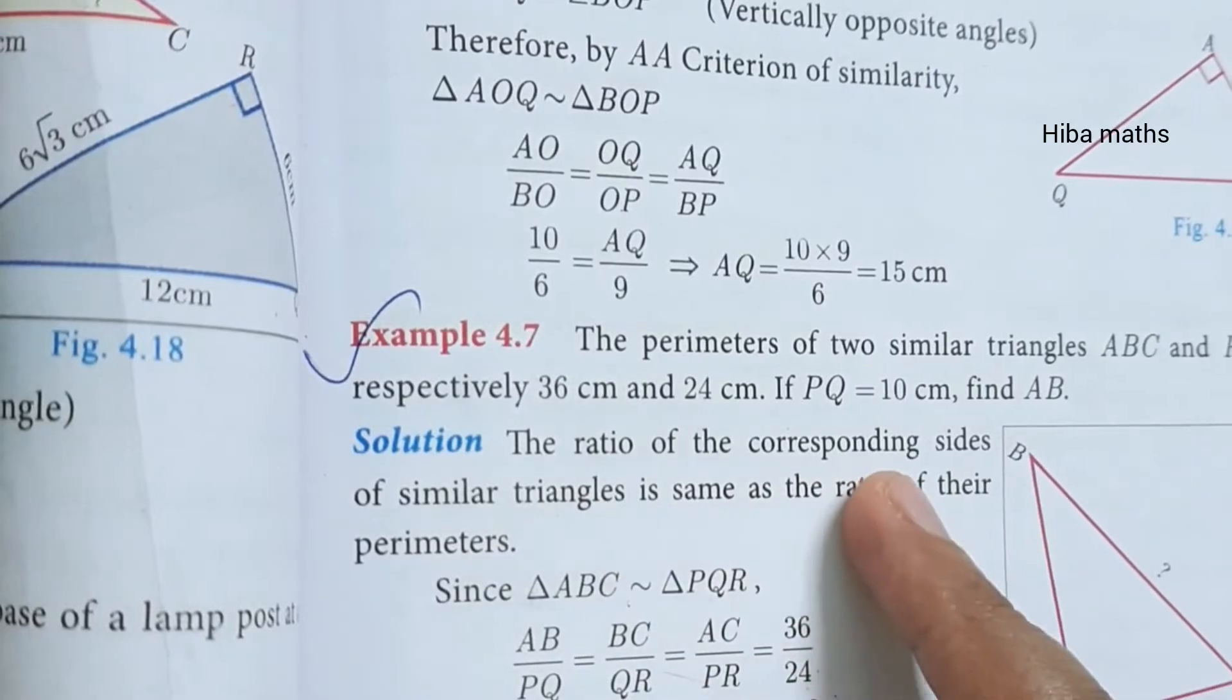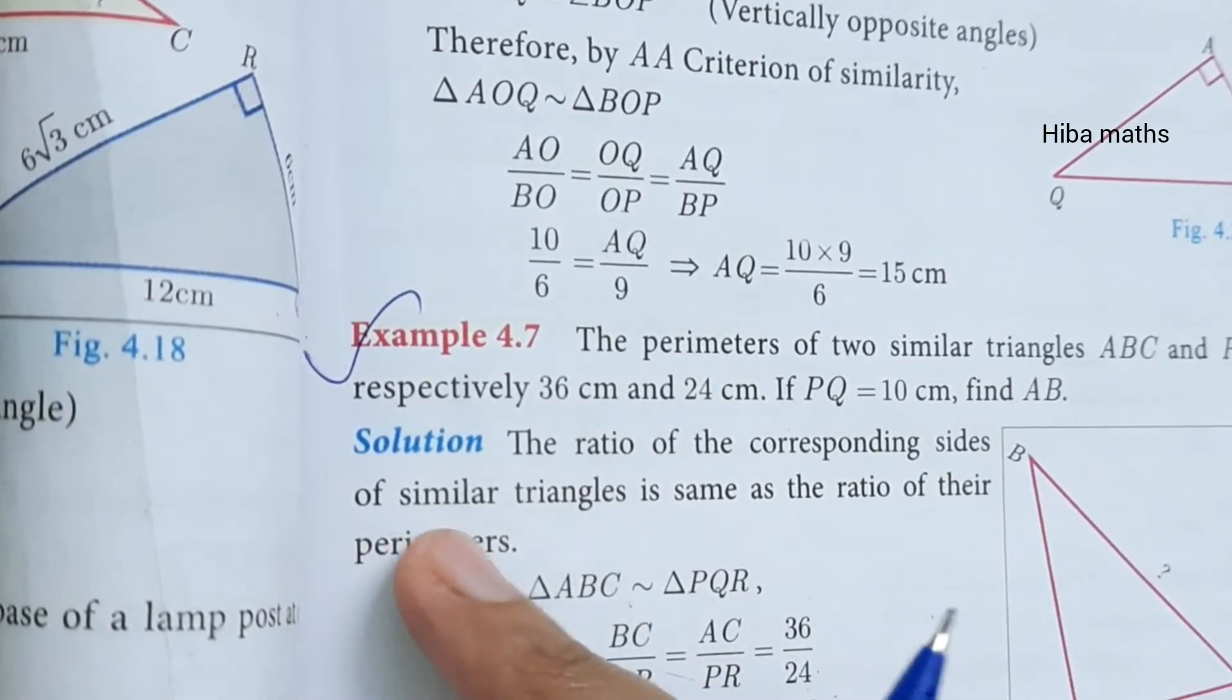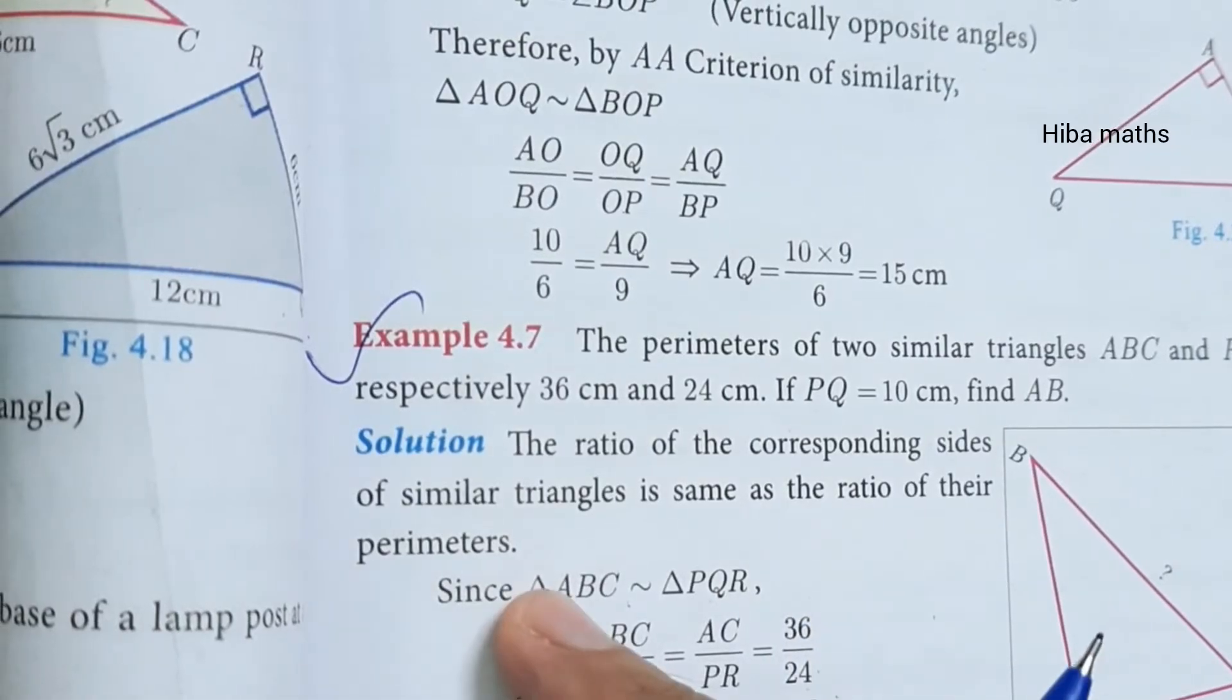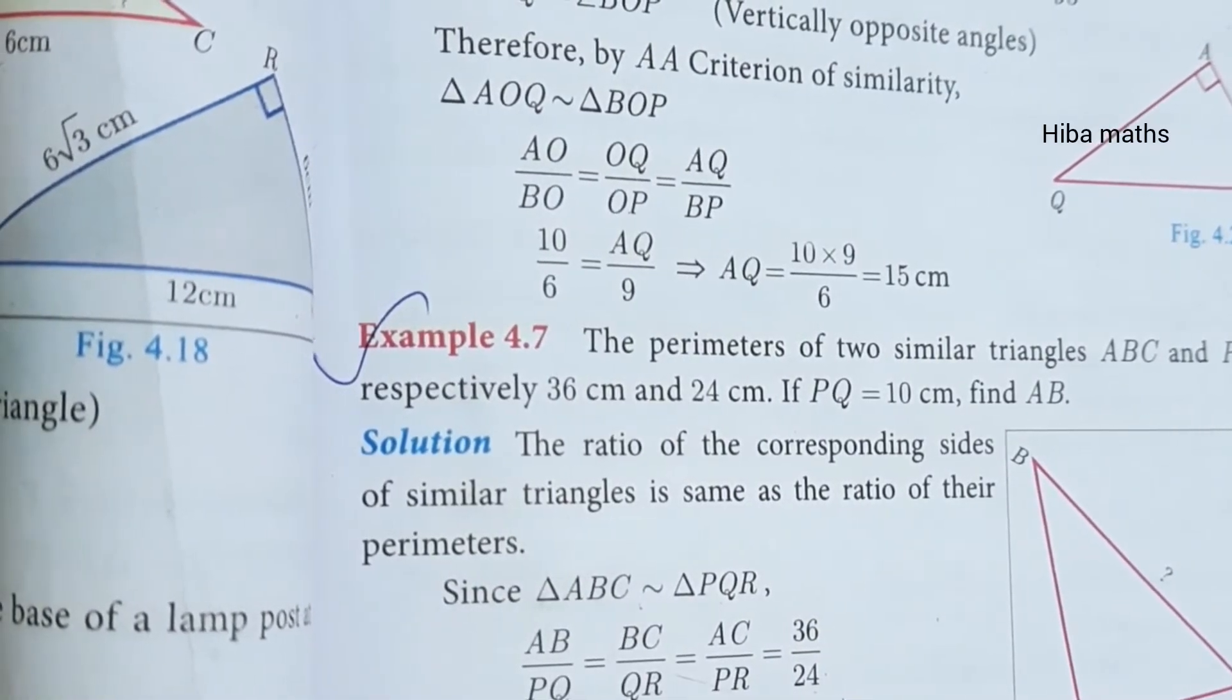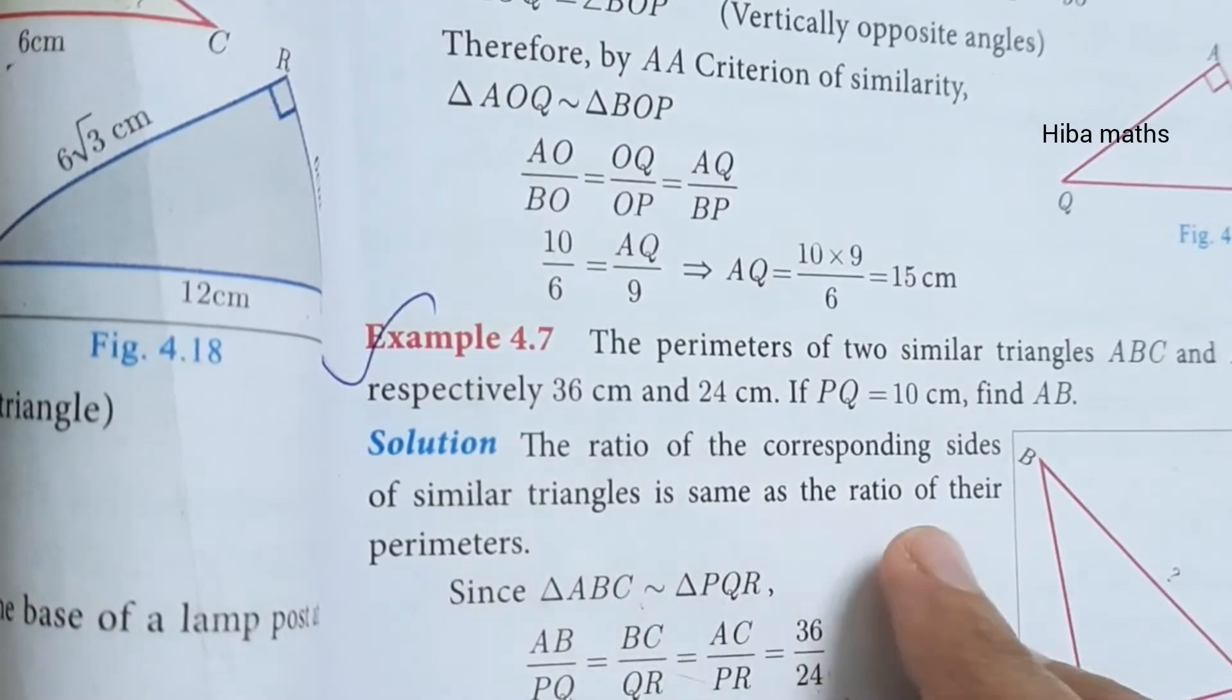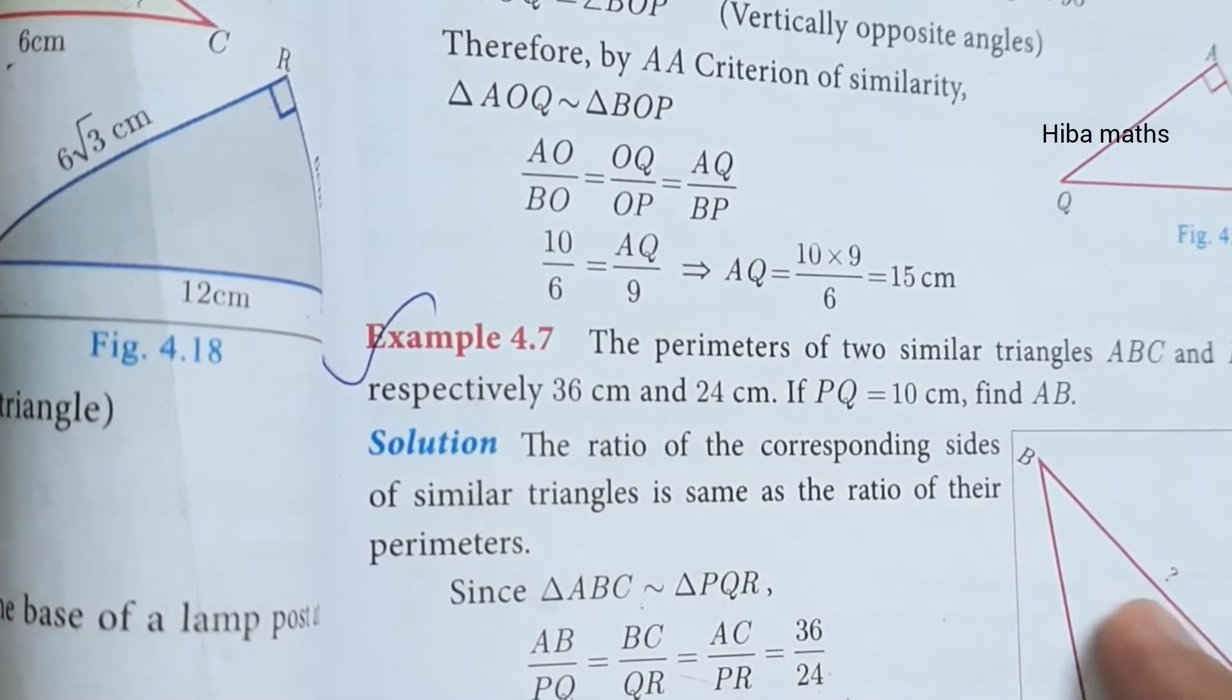The ratio of corresponding sides of similar triangles is the same as the ratio of their perimeters. Perimeters are equal to the corresponding sides.